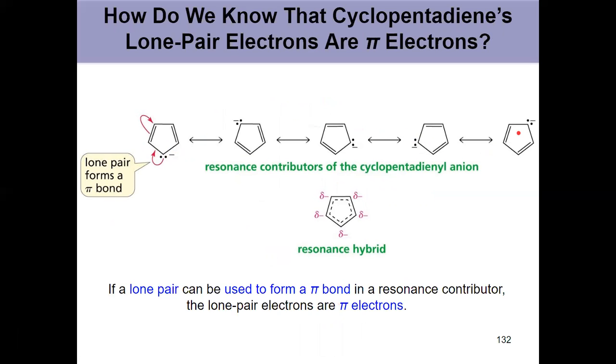The different resonance contributors of cyclopentadienyl anion, seeing how those pi electrons get focused in, brought in, to our overall resonance hybrid. So, that gives me 6 total pi electrons, 3 pairs, and therefore, it's aromatic.